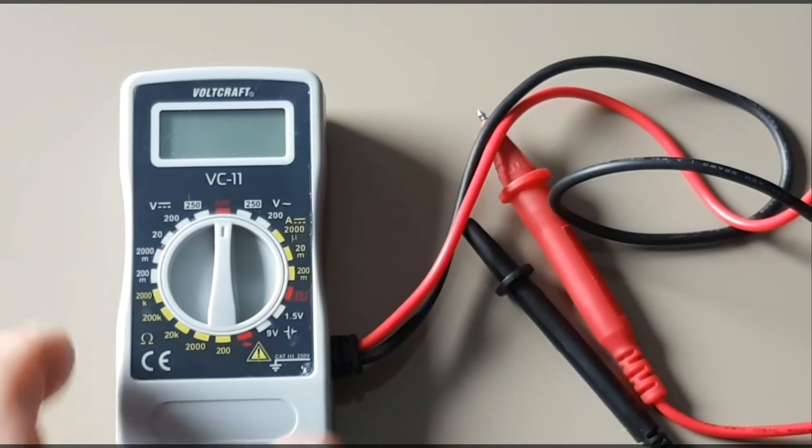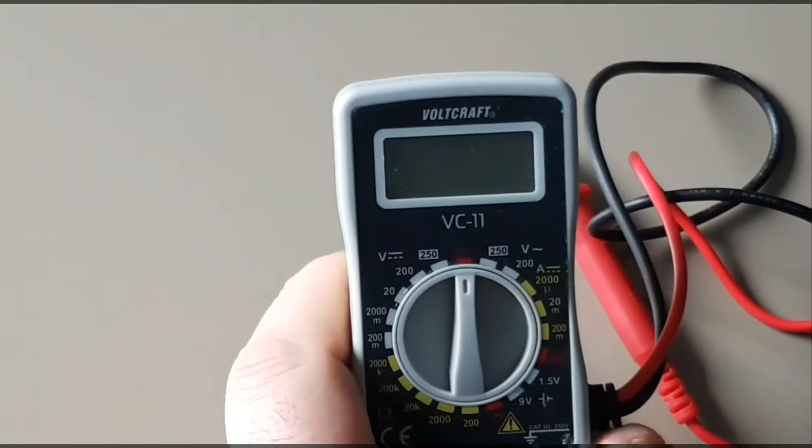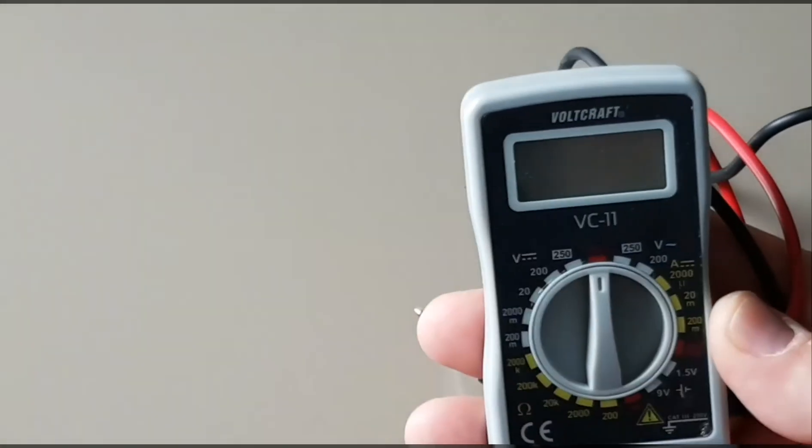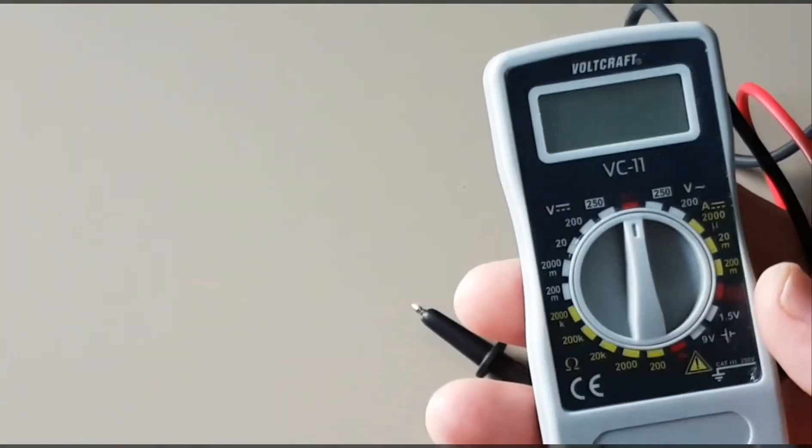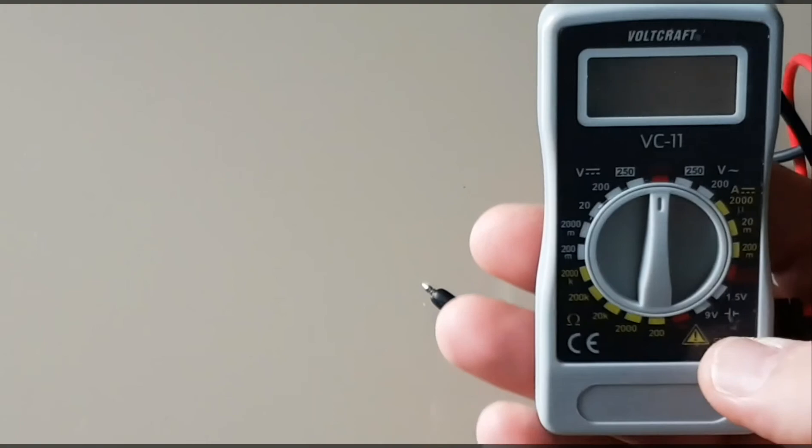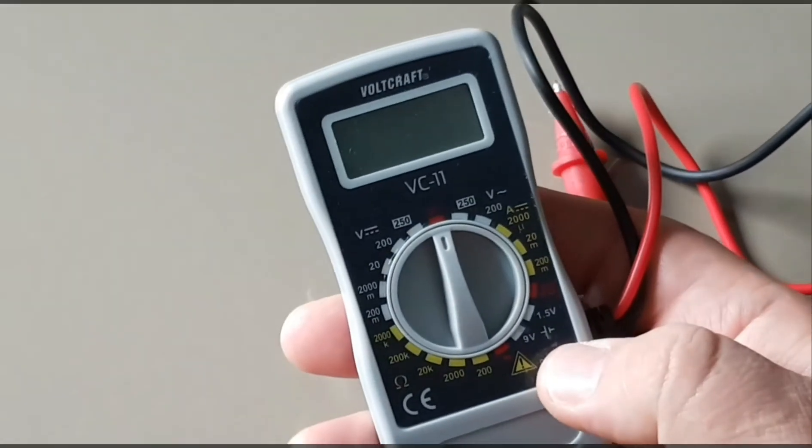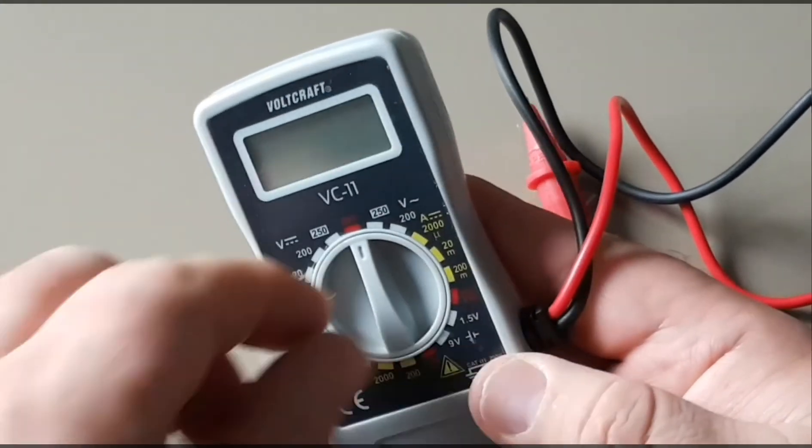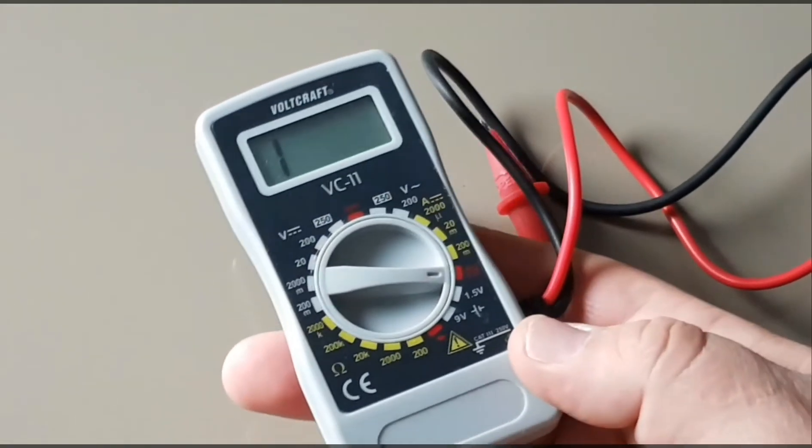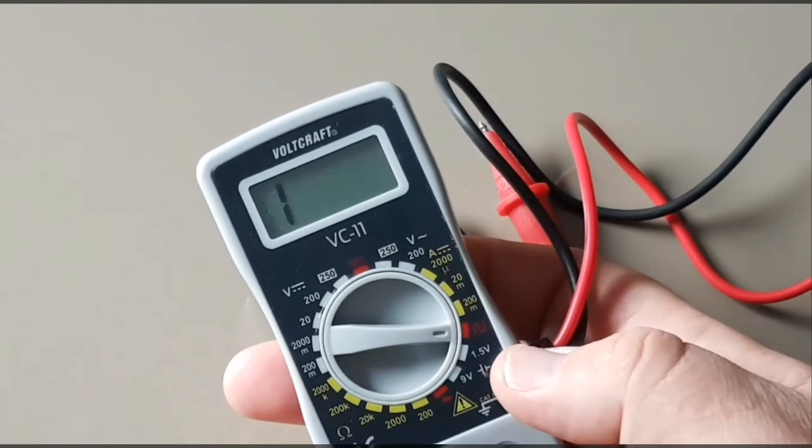Now back to the multimeter itself. The VoltCraft VC11 is a CAT3 250 volt multimeter. It has something called battery test function which puts a small load on 9 volt and 1.5 volt batteries. It also has a signal generator, a rectangle generator feature functionality built into it.